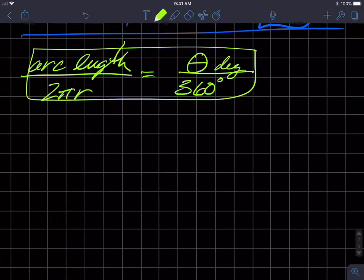We're going to first multiply both sides by 2πr. So we're solving for arc length. So arc length is equal to θ in degrees over 360 degrees, which is a ratio.